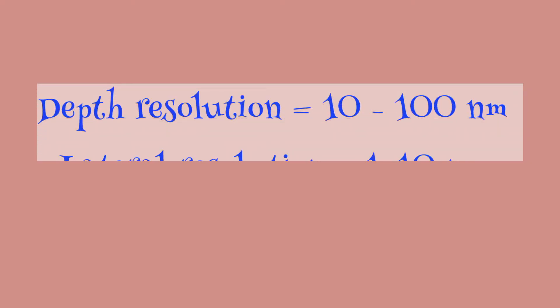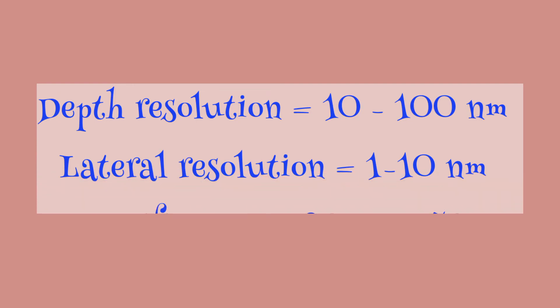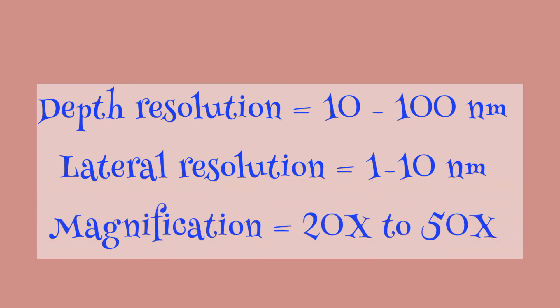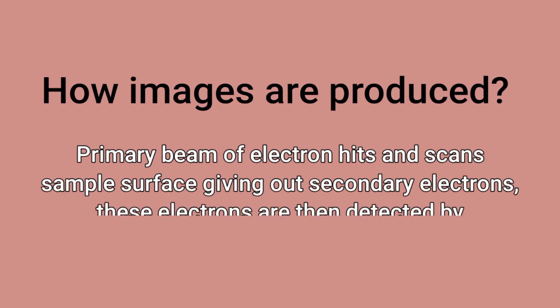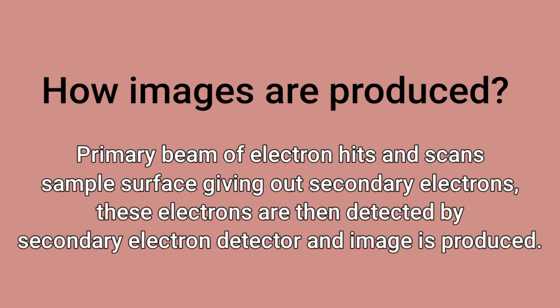Here is some important information about scanning electron microscopy. The depth resolution is 10 to 100 nanometers and the lateral resolution is about 1 to 10 nanometers at very high magnification. How are images produced in SEM? The primary beam of electrons hits and scans the sample surface, giving out secondary electrons, which are detected using a secondary electron detector to produce the image.